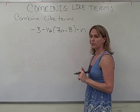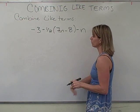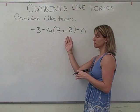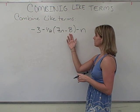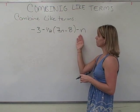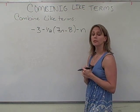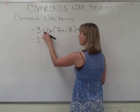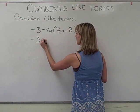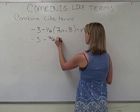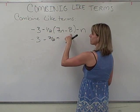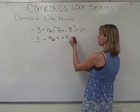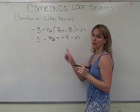Now our next example has a few things going on. So let's take a look. We have minus 3, or negative 3, minus a half times 7N minus 8, and that's in parentheses, minus N. So the first thing we need to do is our distributive property. So we're going to get negative 3, we do minus a half times 7N, that's negative 7 halves N. We do negative a half times negative 8, that gives us a positive 4, and this negative N here is outside the parentheses, so it doesn't get that one half.